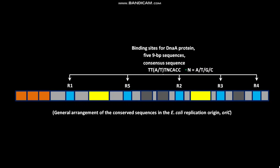The conserved sequences in the E. coli replication origin OriC also have 3 I sites: I1, I2, and I3. I1, I2, and I3 are additional DnaA binding sites.